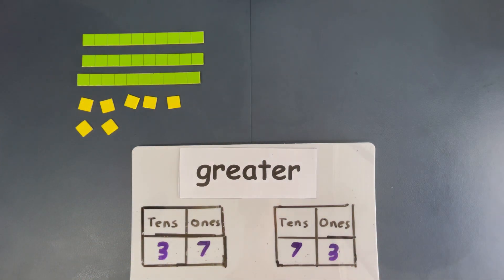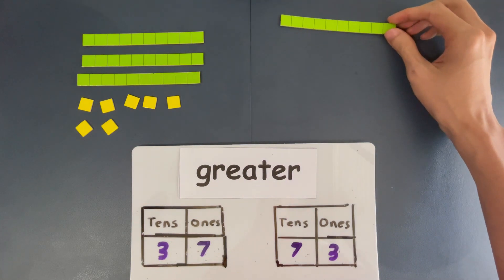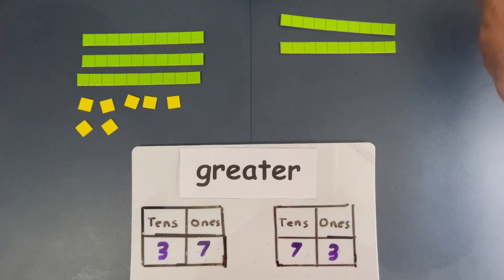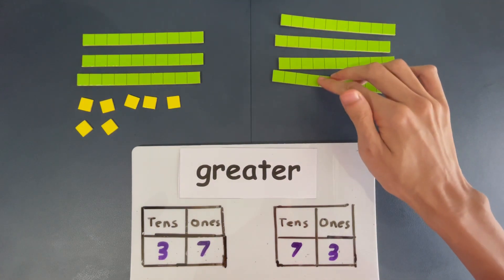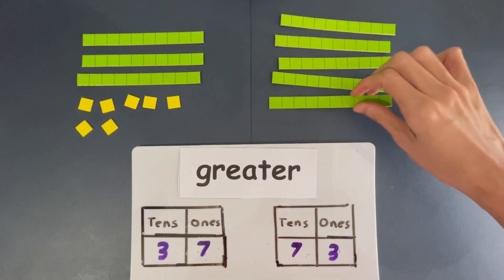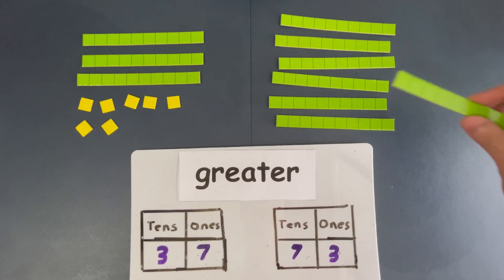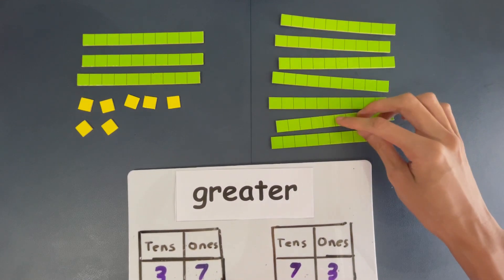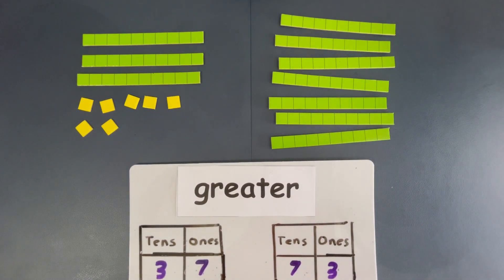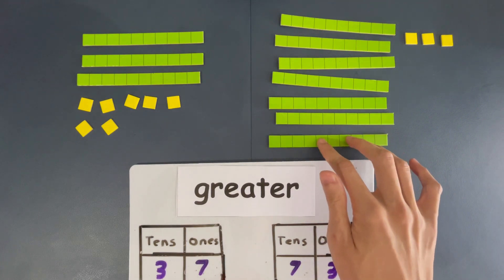Let's make 73, and look how great or small it is. So, one ten, two tens, three tens, four tens, five tens, six tens, and there's no space. Seven tens. And three ones. Let's put three ones. One one, two ones, and three ones.